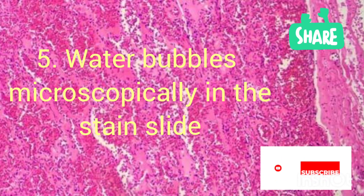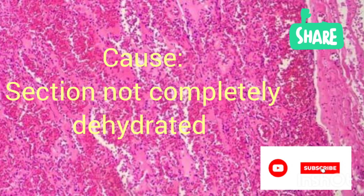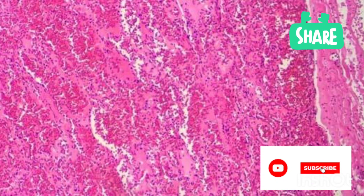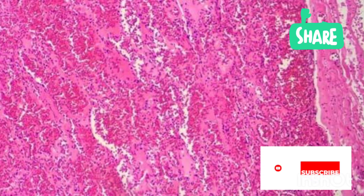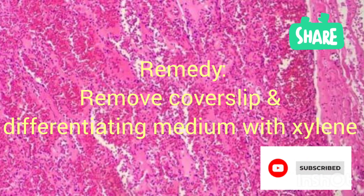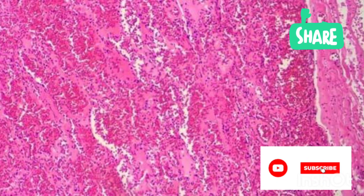When there are water bubbles microscopically in the stained slide, the cause could be that the sections were not completely dehydrated and water is still present in the mounted slide. After staining with eosin, slides go through ascending grades of alcohol to remove water. When this water is not completely removed before coverslipping, you could still see them microscopically. The remedy is to remove the coverslip and mounting medium, then return the slides to fresh absolute alcohol. After the sections are dehydrated, clear with fresh xylene and mount again.